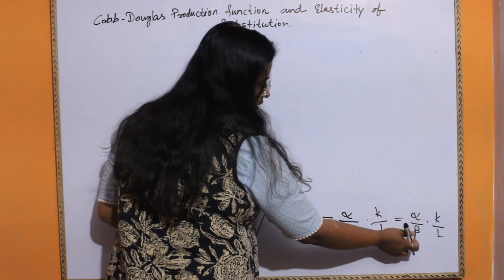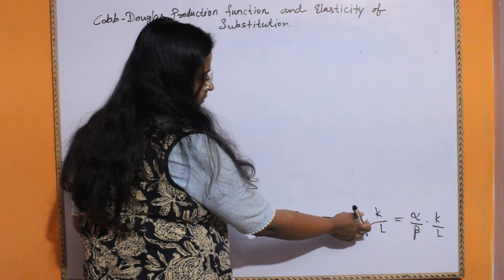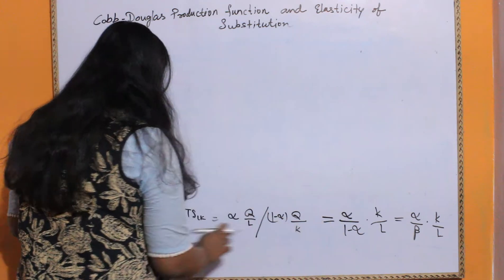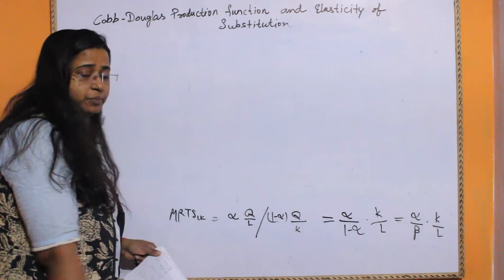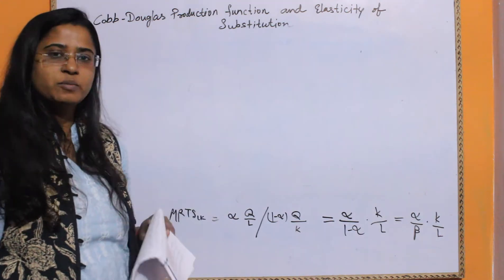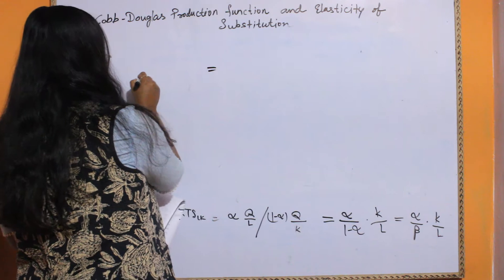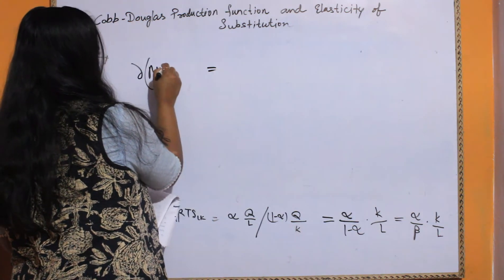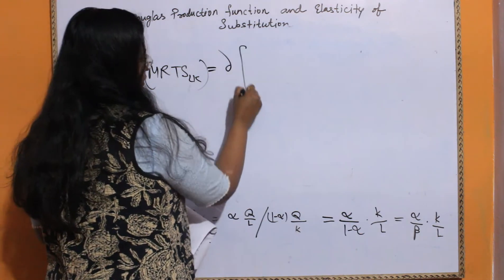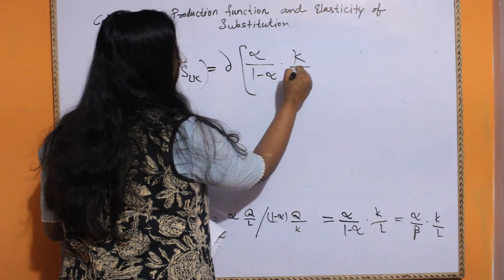We have alpha upon 1 minus alpha multiplied by K by L as our expression for MRTS of L for K. We are also interested in the change in MRTS, so we place a delta sign before this expression: delta of alpha upon 1 minus alpha multiplied by K by L.